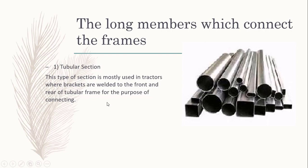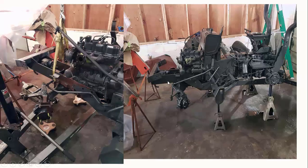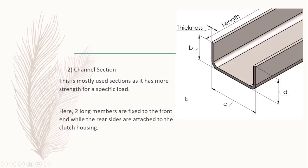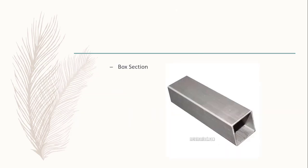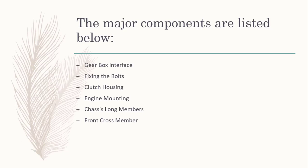The members of the frame ultimately carry all the load. There are three or four types of cross-sections used. The first is the tubular section — a circular tube — mostly used in tractors where brackets are welded to the front and rear of the tubular frame for connecting components. The next is the channel section, also known as a C-section, which is most effective because it can bear the maximum load — and nowadays C-sections are predominantly used. There is also the box section, used less frequently. Key components attached to the chassis include the gearbox interface, clutch housing, engine mounting, long members, and front cross member.